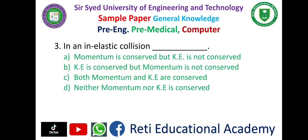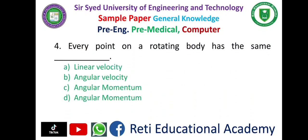Question number three: In an elastic collision — A. Momentum is conserved but kinetic energy is not conserved, B. Kinetic energy is conserved but momentum is not conserved, C. Both momentum and kinetic energy are conserved, D. Neither momentum nor kinetic energy is conserved. The correct answer is A: momentum is conserved but kinetic energy is not conserved. Question number four: Every point on a rotating body has the same — A. Linear velocity, B. Angular velocity, C. Angular momentum, D. Angular momentum. The correct answer is B: angular velocity.